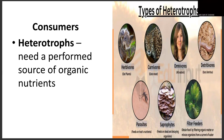The types of heterotrophs include herbivores, carnivores, omnivores — which can eat both plants and meat — detritivores, which eat detritus, parasites, saprophytes, and filter feeders.